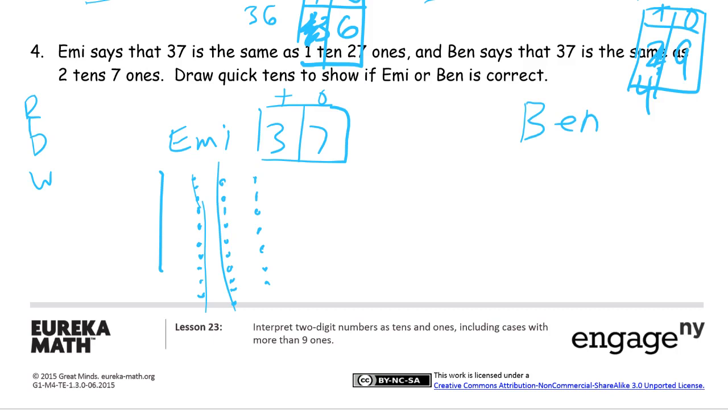Ben says 37 is the same as 2 10s and 7 1s. So Ben has 2 10s and 1, 2, 3, 4, 5, 6, 7 1s. All I did was draw what he said to draw. And then now I'm going to make a little place value chart. 10s and 1s. He has 2 10s and 7 1s, that's 27. So Emmy has 37 and Ben has 27. So Emmy is the one who's right. Emmy is correct.